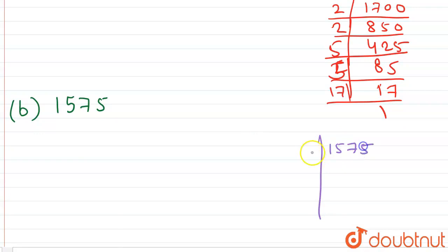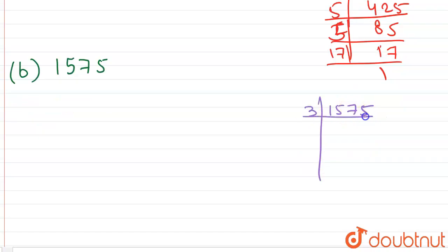This is 1575. From 3 we get 525, from 3 we get 175, from 5 we get 35, from 5 we get 7, from 7 we get 1.